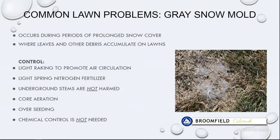Gray snow mold occurs during or after periods of prolonged snow cover, particularly where you have a mat of leaves or other debris on the lawn. If your leaves or grass clippings are mulched up and left, they won't cause this. It actually doesn't do lasting damage and you don't need to control it with chemicals. Various things you can do: promote circulation by raking, aerating, or overseeding if you choose. A little fertilizer jumpstart in the spring can help. You'll tend to see this in north-facing or shady areas since they remain snow-covered longer.